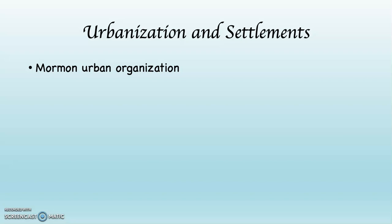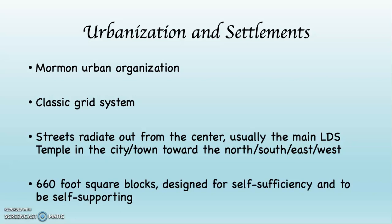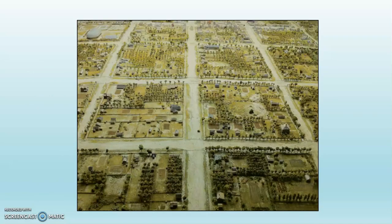Mormon urban organization is hyper organized. They use a classic grid system, and the streets radiate outward from the city center — usually the main LDS, Latter-day Saints, temple in the city or town. The streets radiate north, south, east, and west. Classically, these blocks were set up in 660-foot square blocks, designed for self-sufficiency and to be self-supporting. This has to do with the history of the Mormons and their relationship with other people in the United States, which in the beginning was not very good. You can see in this diagram that they were set up to be agriculturally self-sufficient so that people could support themselves on the land they were living on, and wouldn't have to rely on the rest of the country.